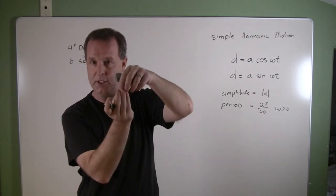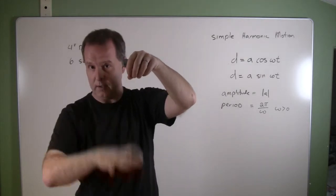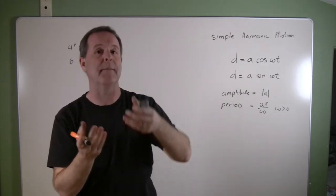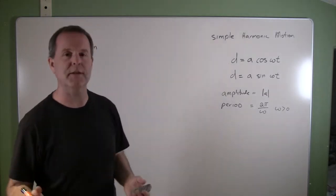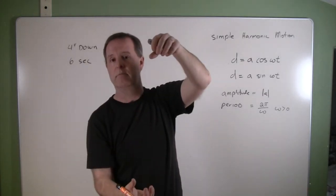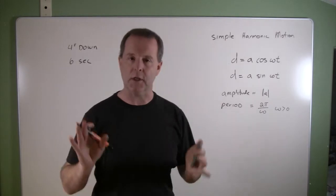is starting at the resting position and then maybe you let it go and it goes down and comes back on up or whatever it might be, then use the sine function. So which one do you think we're going to use on this one where I pulled it down four inches? Yeah, I'm going to use a cosine one